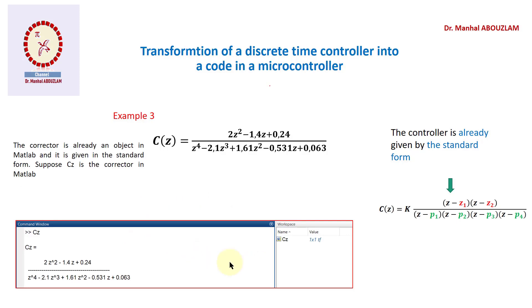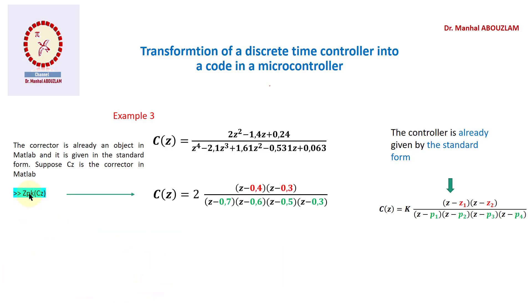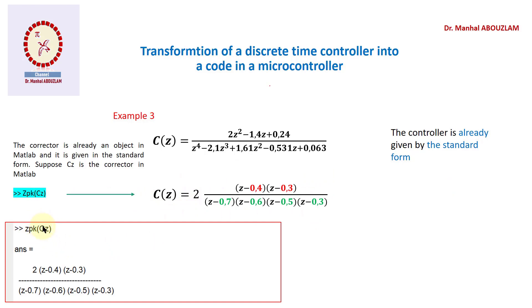We can use another method to find the factored form. Suppose the controller in standard form is an object in MATLAB. In this case we can use the function `zpk`, putting our controller as the argument, and that gives us the factored form directly. In MATLAB we put our controller in parentheses as an argument of `zpk` and it gives us the factored form.